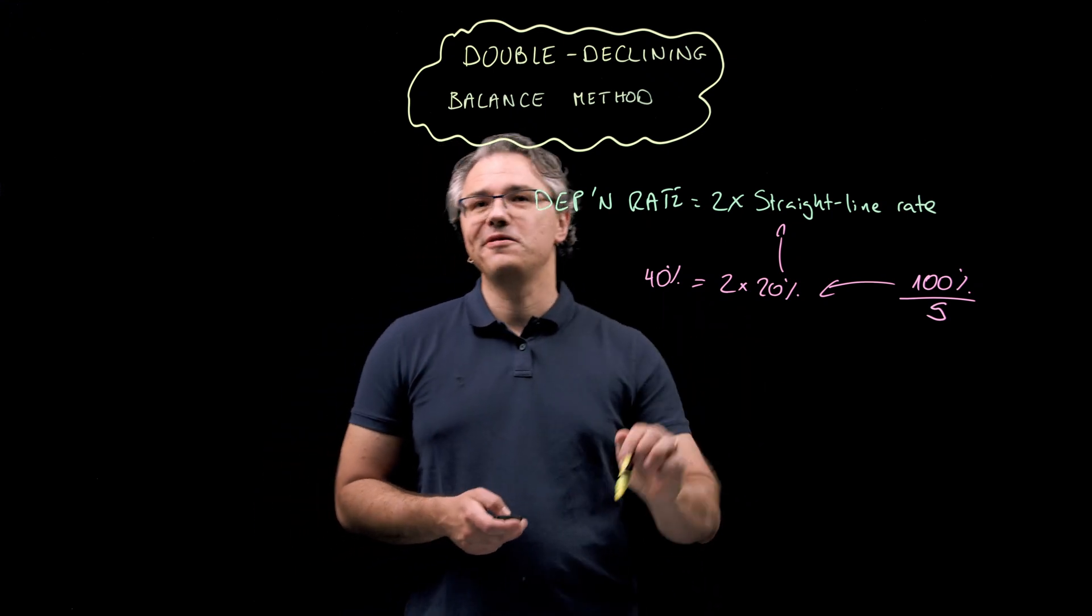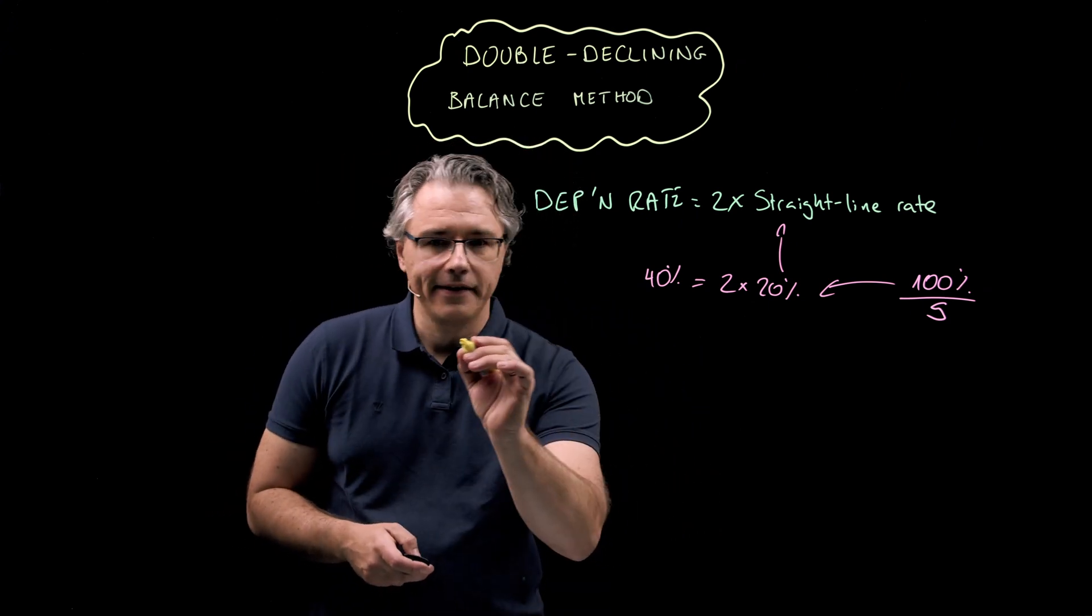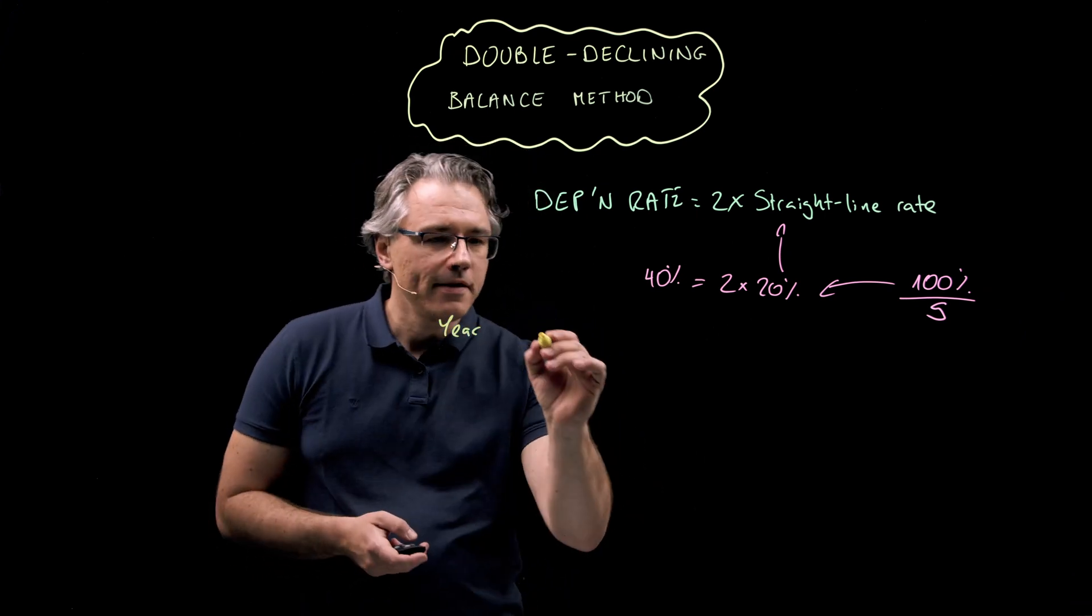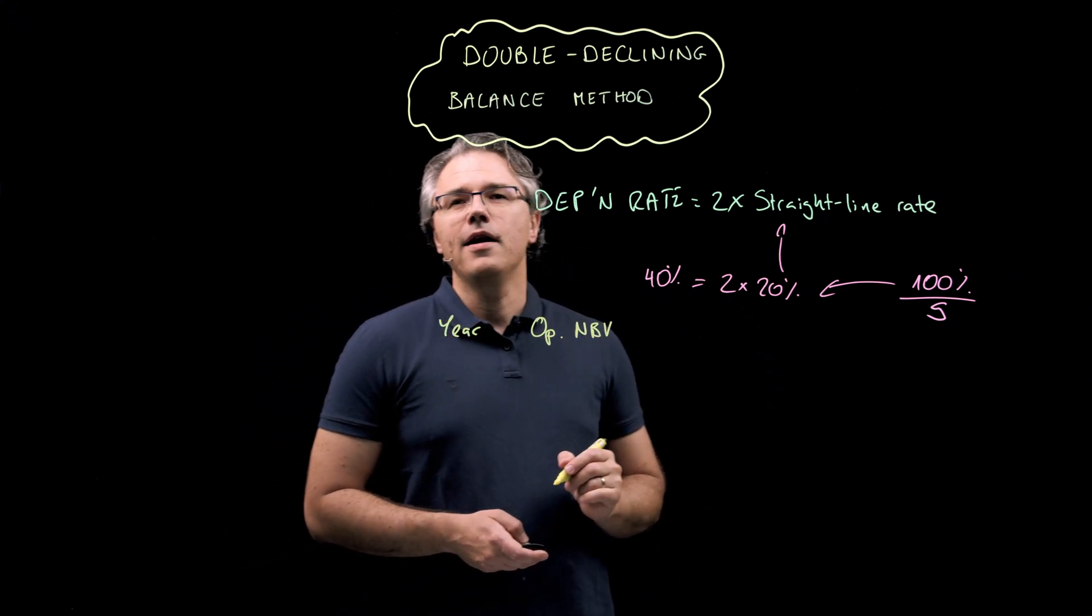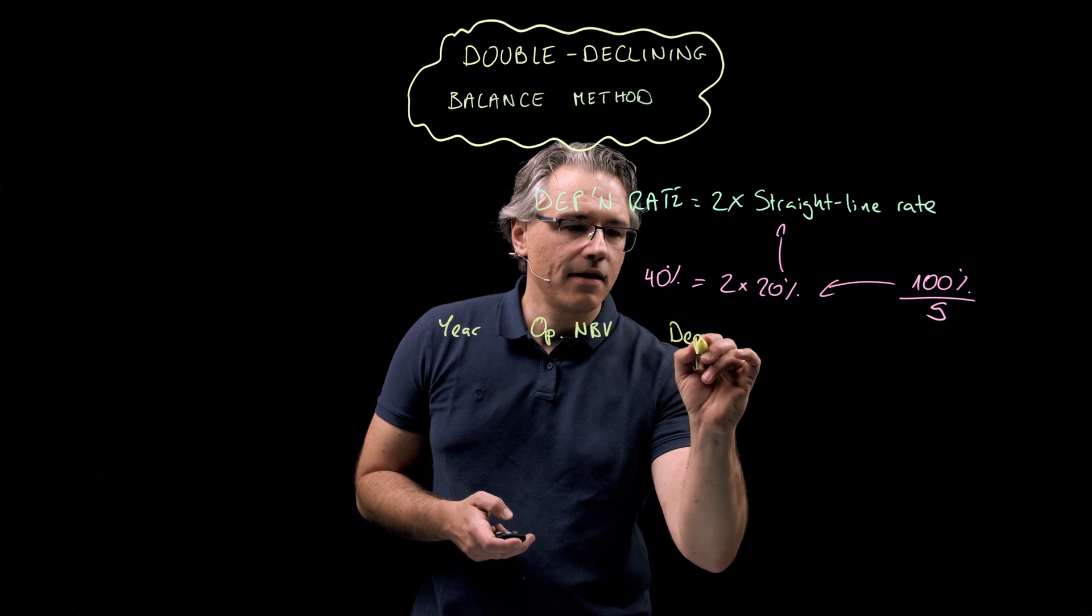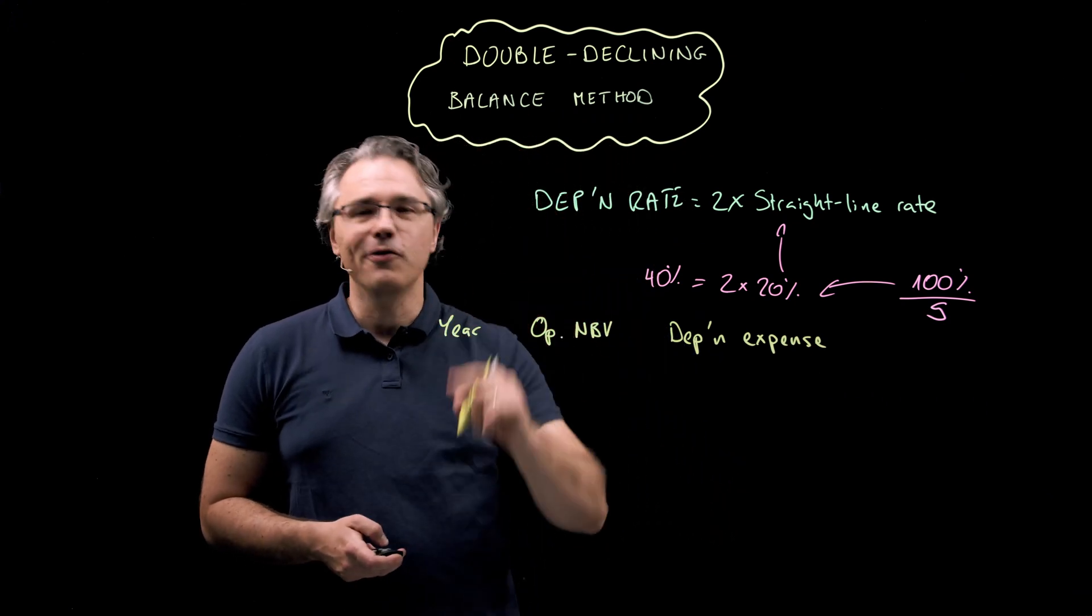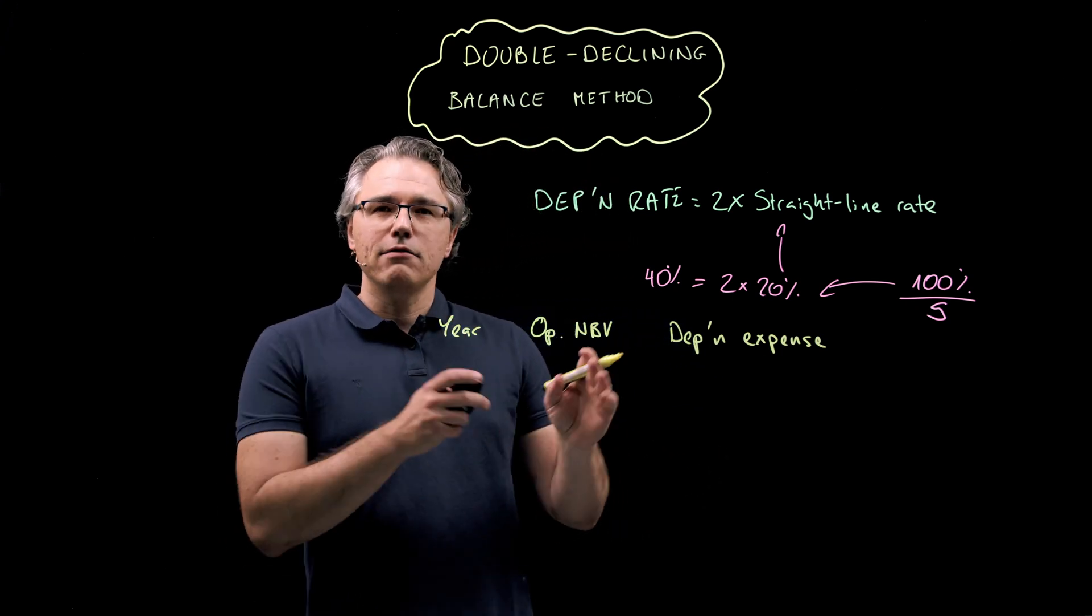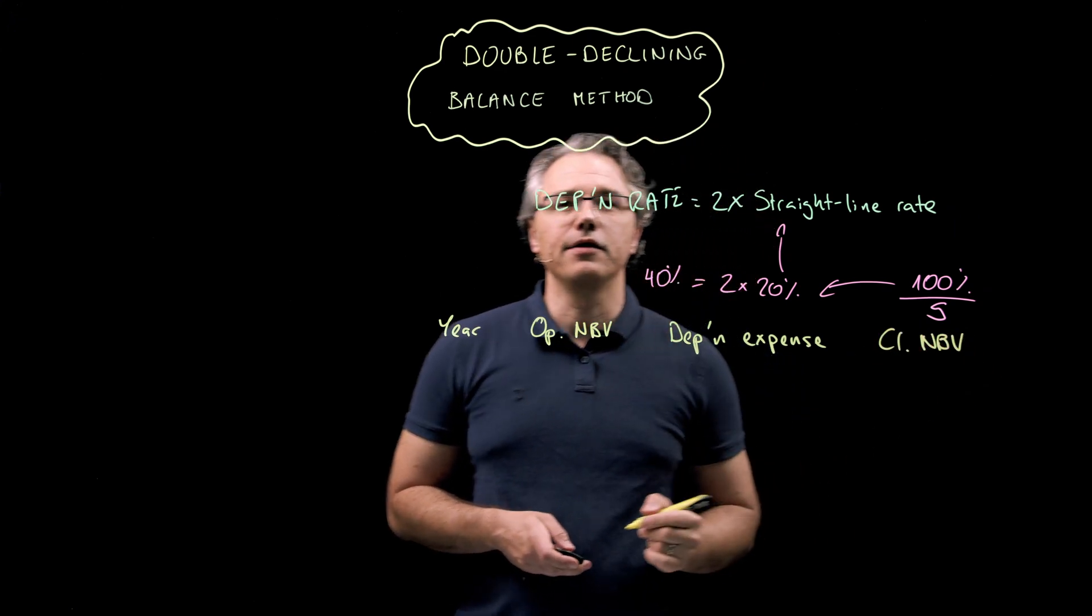Let me do a little table over here to help keep things organized. I'm going to have the year in this left most column. Then opening NBV, where NBV naturally stands for net book value, so basically the asset's carrying amount. Then the depreciation expense for the year. And whenever you see me write DEP apostrophe N, it stands for depreciation. We've got this and the last column is going to be the closing NBV, so the net book value at the end of the year.